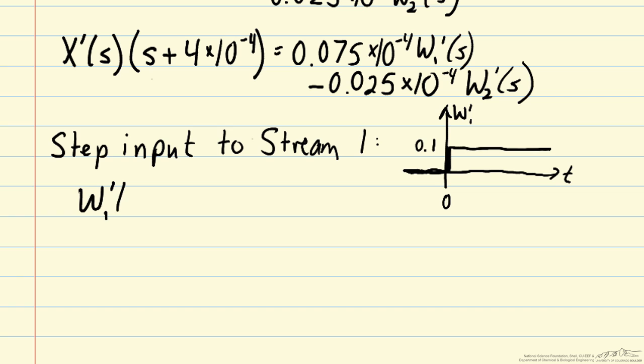So w1' of s is 0.1, the amplitude of the step, over s. 1 over s is the Laplace transform of a step function. And then we'll assume no deviation in w2, so that will just be 0.